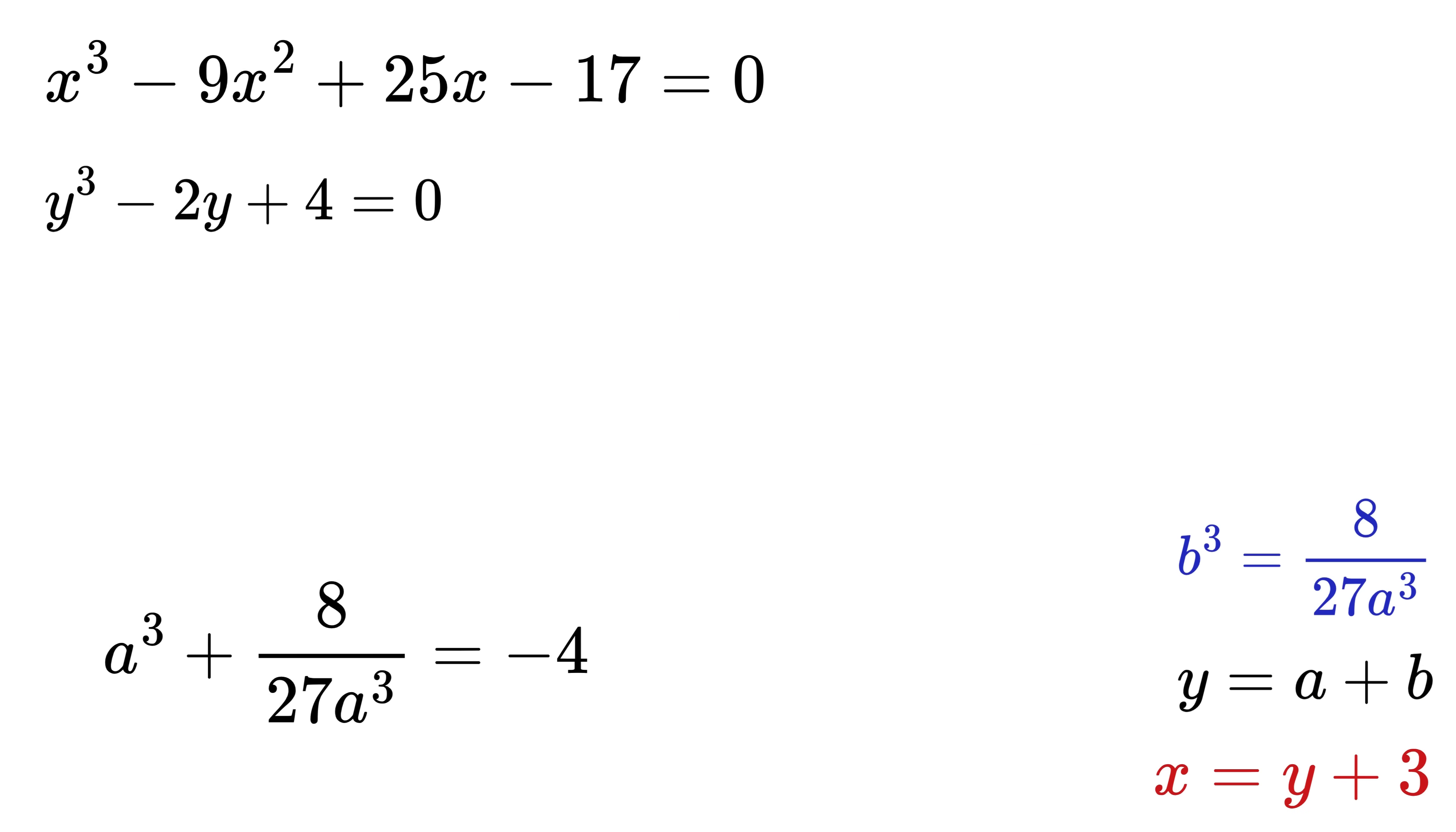I promise this will be our last use of the variable, which is r = a³. So this equation becomes r + 8/(27r) = -4. Now multiply every term on both sides by 27r to get rid of the fraction and simplify. We get 27r² + 8 = -108r. Now bring all terms to one side to form a standard quadratic equation: 27r² + 108r + 8 = 0. Finally, we have reduced a cubic equation, which was this, into a quadratic equation, which is this. Amazing!